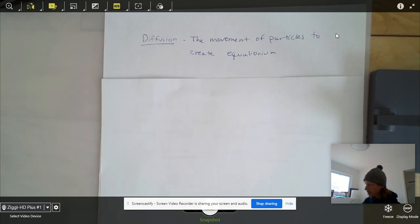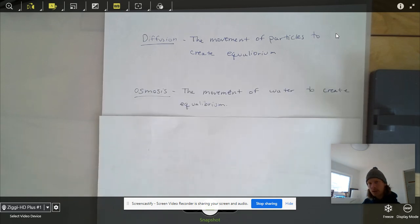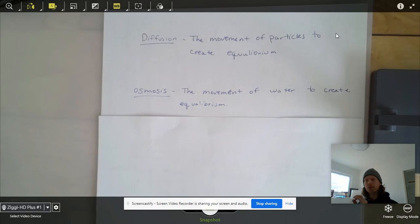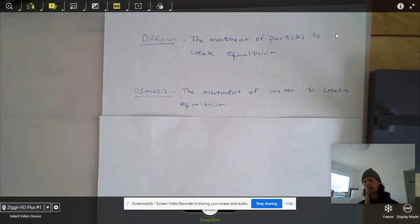We're going to talk about osmosis. Osmosis is very similar to diffusion, but it's specific to water. So it has the exact same idea where it's the movement of particles to create equilibrium, but we're specifically now talking about water particles. In this case, the water is going to be the one doing moving, and we're going to see why this happens.